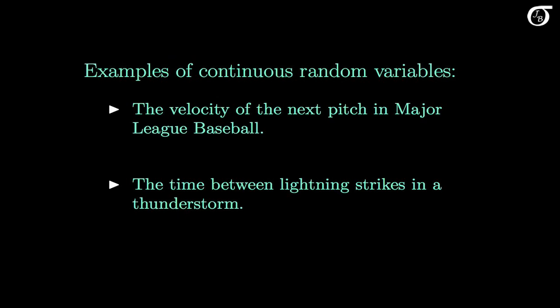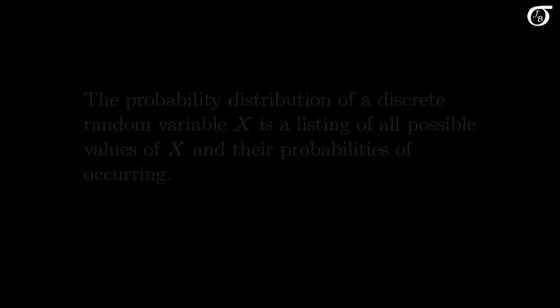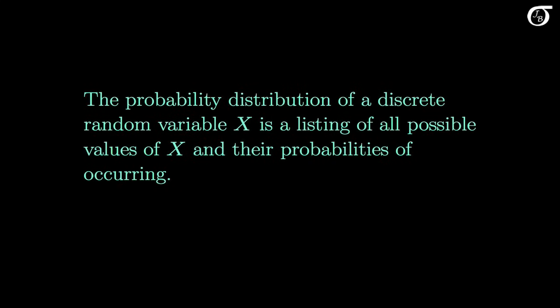Because of the differences between discrete and continuous random variables, we need to model them a little differently. Every random variable has something we call a probability distribution. There are some important differences between discrete probability distributions and continuous probability distributions, and for the rest of this video I'm going to discuss discrete probability distributions. The probability distribution of a discrete random variable x is a listing of all possible values of x and their probabilities of occurring.